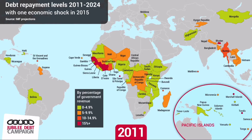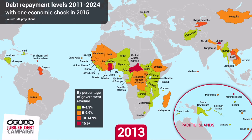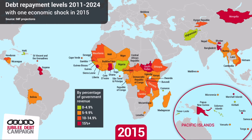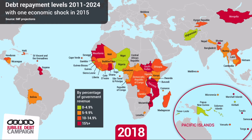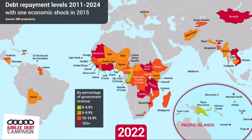We can see that in this GIF, which shows that the levels of debt that countries need to pay back, especially in sub-Saharan Africa, are generally getting worse year on year. It can be as high as up to 15% of all the revenue that a government will actually have.